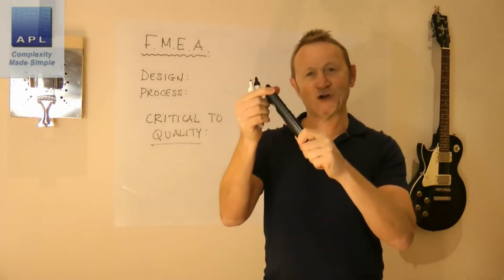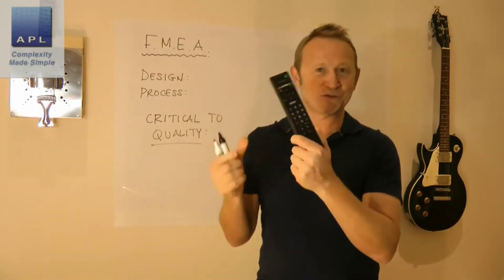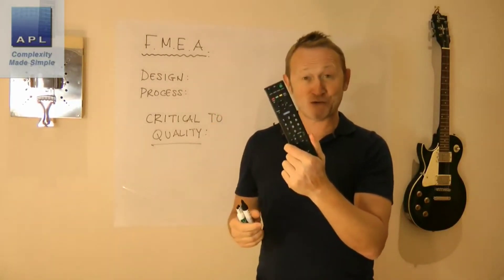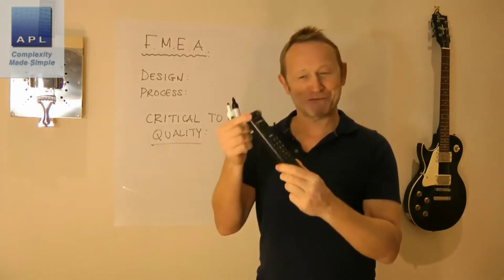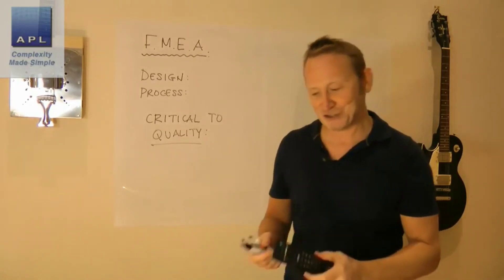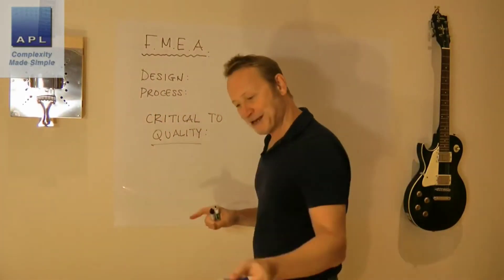So if we take our remote control and we say, okay, what's one of the things that's critical to quality about the remote control? We'll say that it's strength. We need this thing to be strong. Why do we need it to be strong? Because some fat guy who's more interested in watching the football than looking at the remote control might come along and sit on it on the sofa. So we have to have a certain strength to this. That's the Critical to Quality.